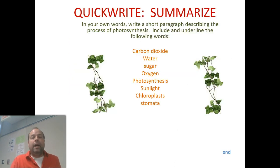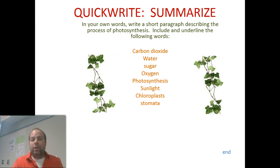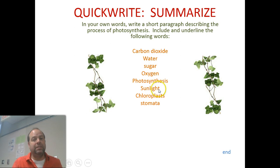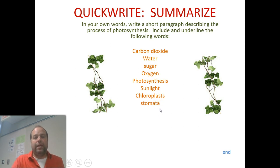That's what plants do with their food production. For a quick write — the last thing in your notes — write a short paragraph describing the process of photosynthesis. In your paragraph, include these words: carbon dioxide, water, sugar, oxygen, photosynthesis, sunlight, chloroplast, and stomata. Thank you for listening — until next time!